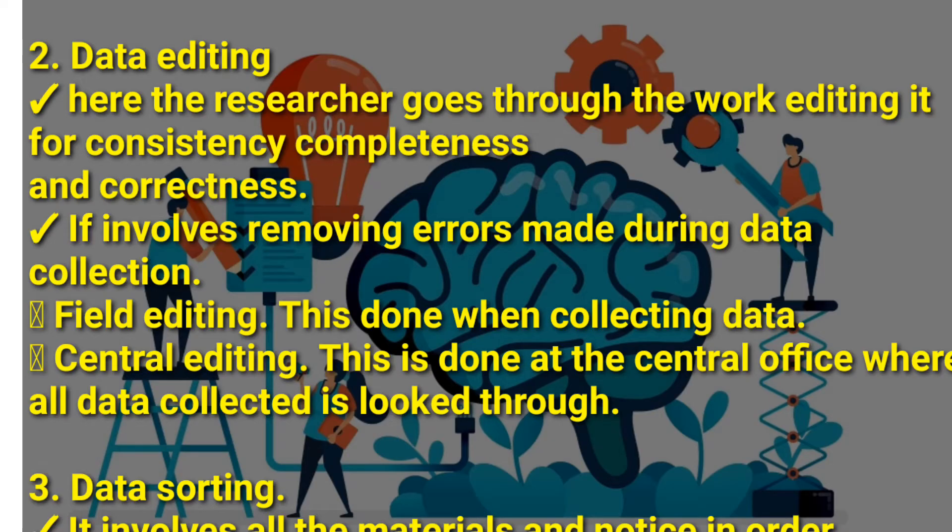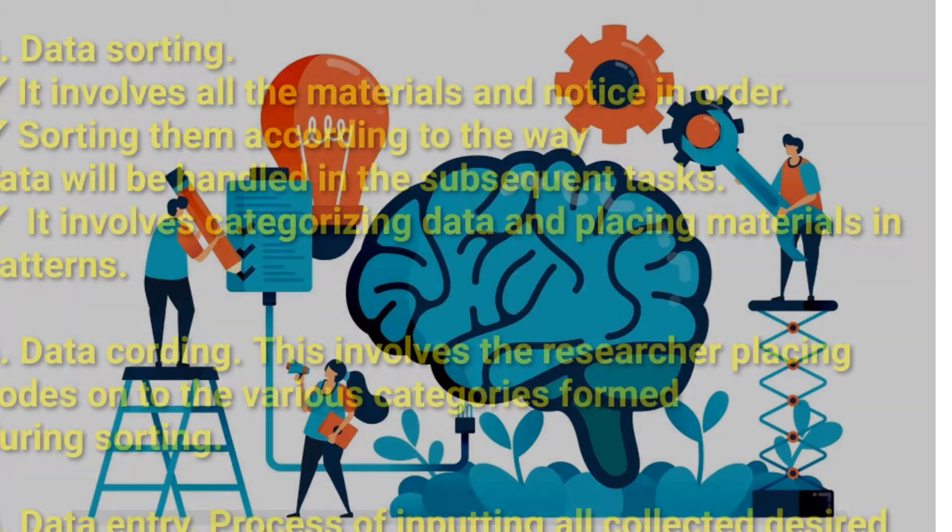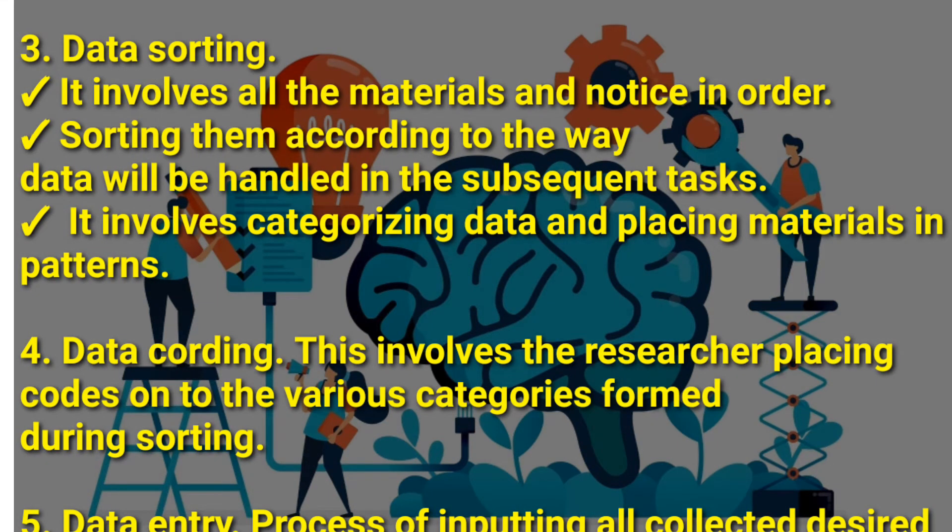The third stage is called data sorting. It involves all the materials and notes in order—you put the data the way it's going to be used. Which data will be used first and which data will be used last? You are sorting them according to the way data will be handled in subsequent tasks. It involves categorizing data and placing materials in patterns.